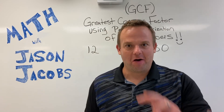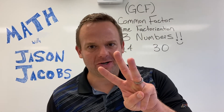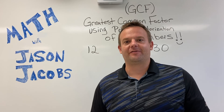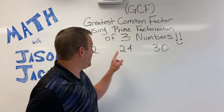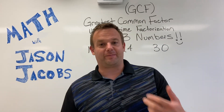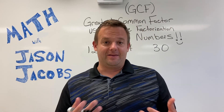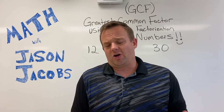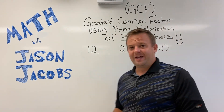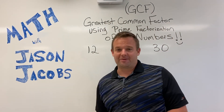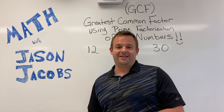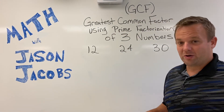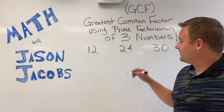Greatest common factor of three numbers — is that possible? Yeah, it is. We're going to find the greatest common factor of three numbers: 12, 24, and 30. I'm going to teach you how to use the prime factorization method, the method that works really well when you're using multiple numbers and the numbers are larger. My name is Jason Jacobs and this is Math with Jason Jacobs. Let's get ready to learn the greatest common factor of three or more numbers using prime factorization.